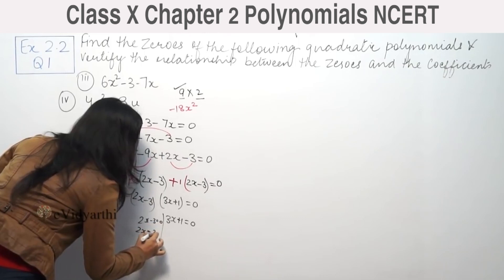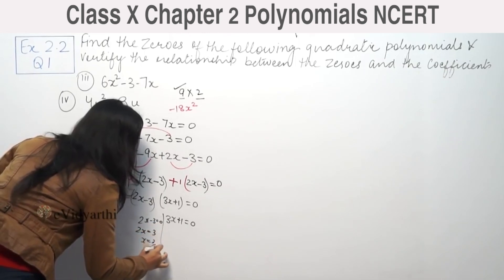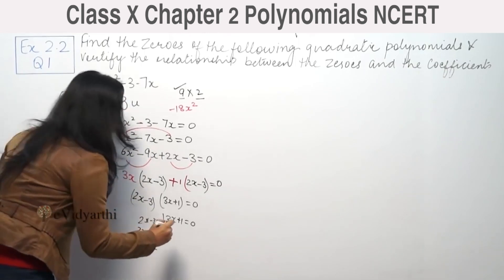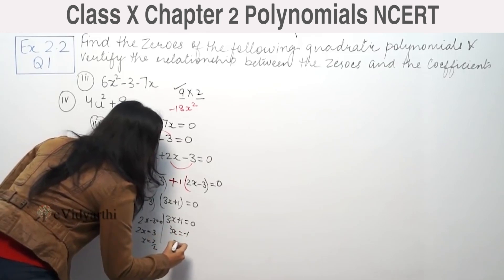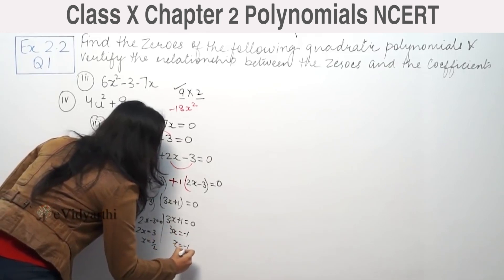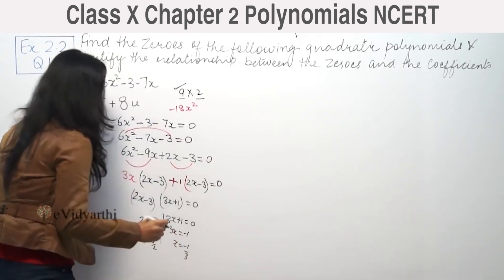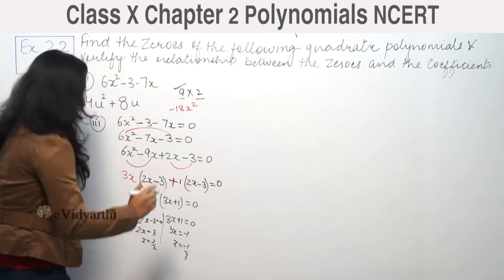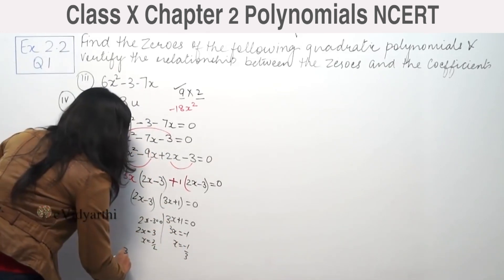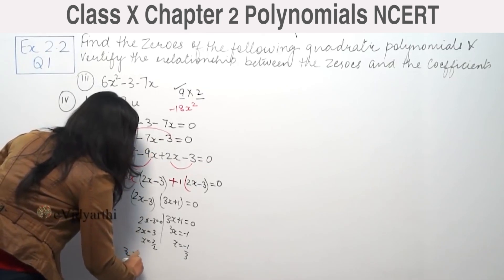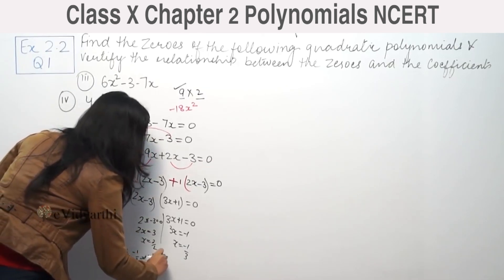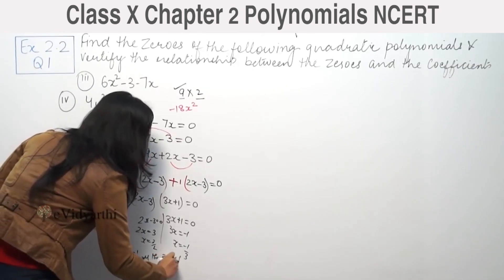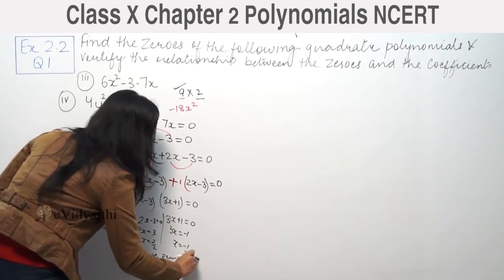Setting each factor equal to zero: 2x equals 3, so x equals 3 by 2. And 3x equals minus 1, so x equals minus 1 by 3. Therefore the two zeros of the polynomial are 3/2 and minus 1/3.